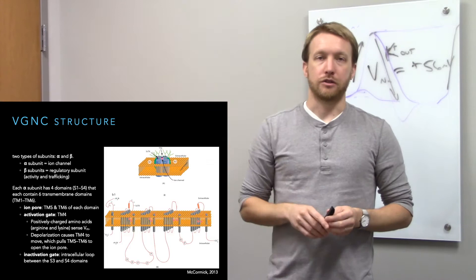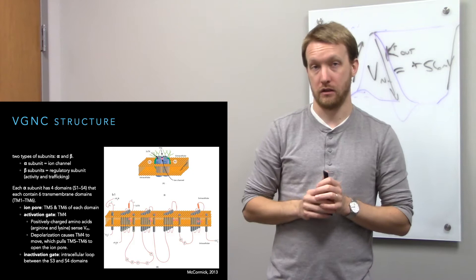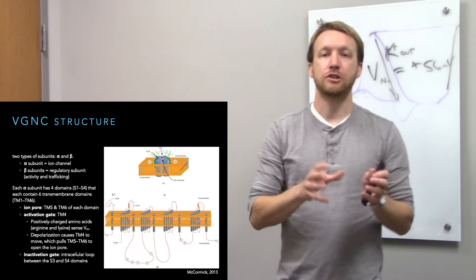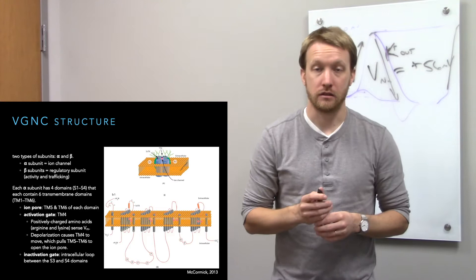In this illustration, the top shows the assembled channel cartoon and the bottom shows it broken apart. The beta subunit is shown first — ignore it. The alpha subunit is the big chunk. Each subunit has six transmembrane domains — a domain that spans the membrane. The fifth and sixth transmembrane domains move toward the center to form the ion pore.